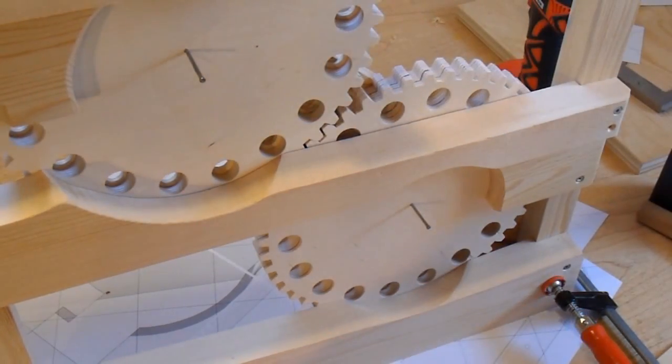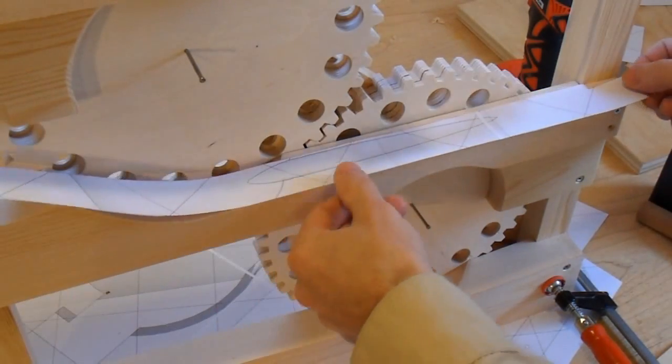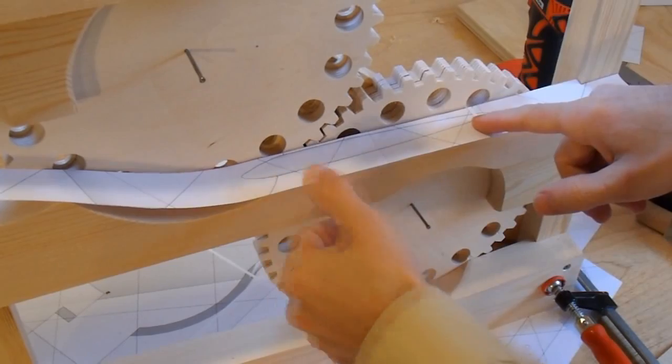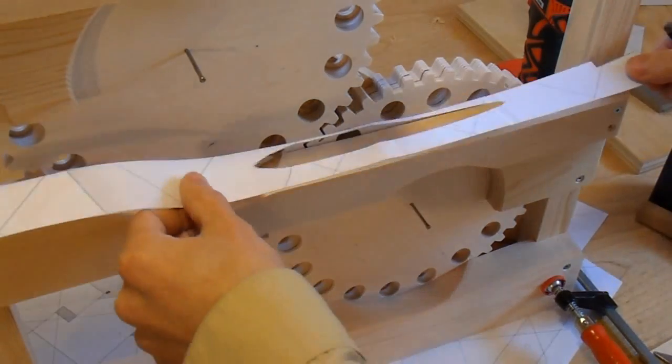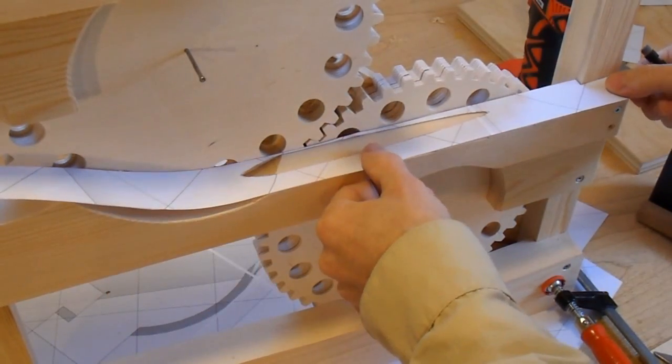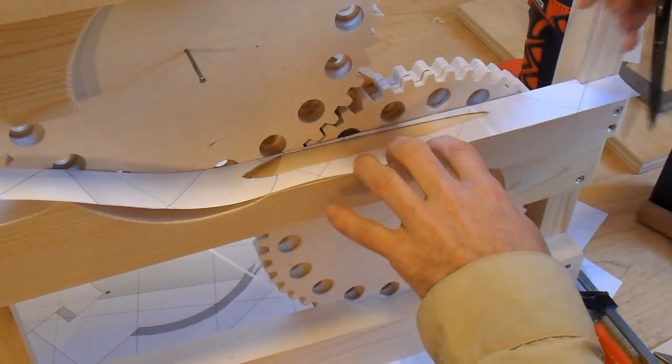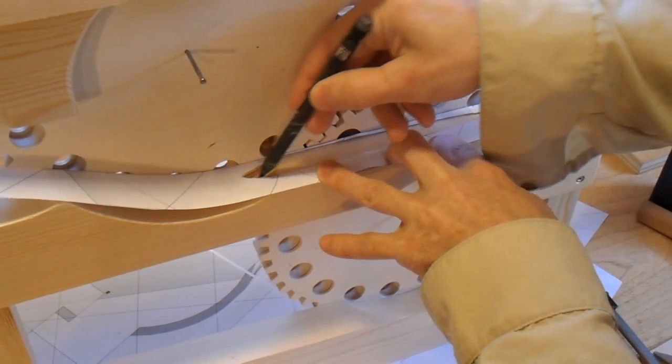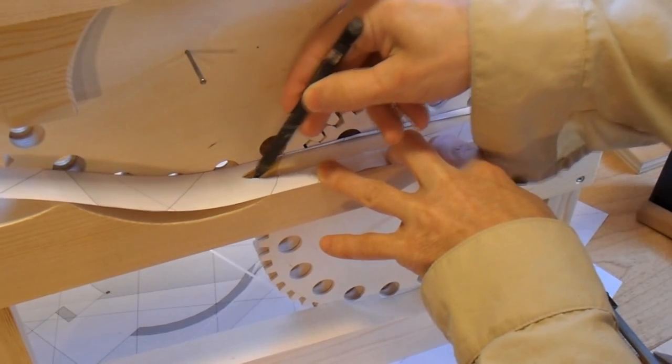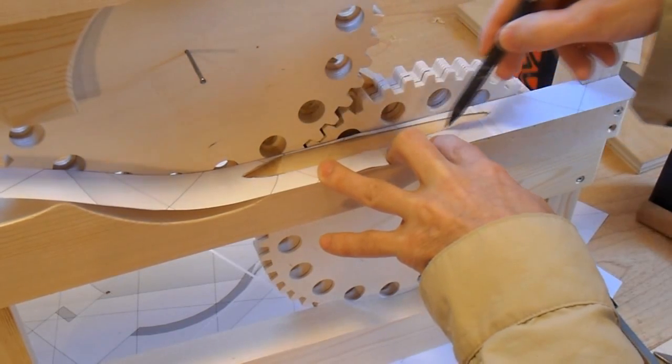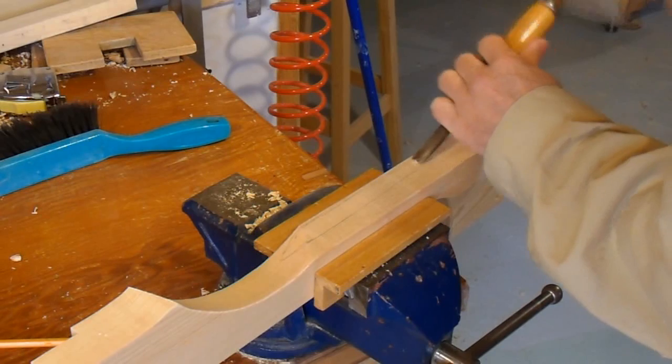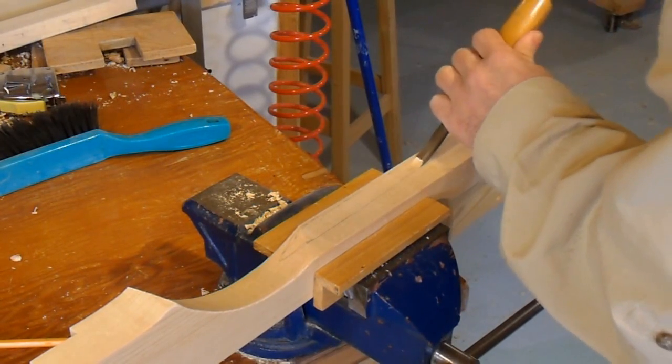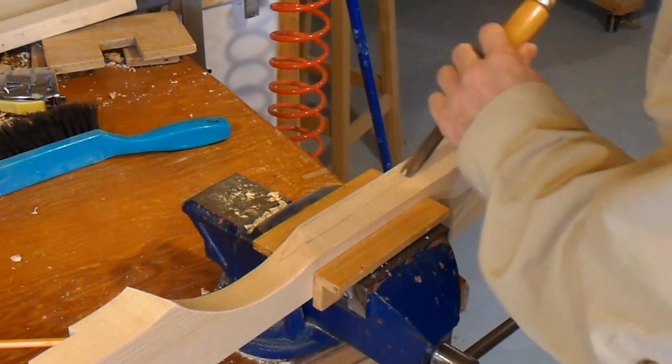I still need to cut a groove in that middle rail for catching the marbles. Here's my paper template with the groove where it's gonna be. I cut a hole where that groove is supposed to be so that I can trace out its shape with a pencil. I tried to figure out a setup for cutting this groove with a router, but in the end it's much easier and quicker to just cut it out with a chisel by hand.